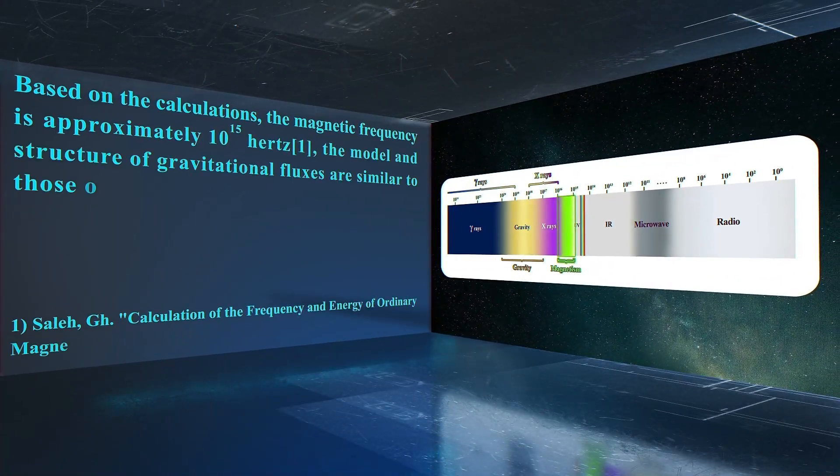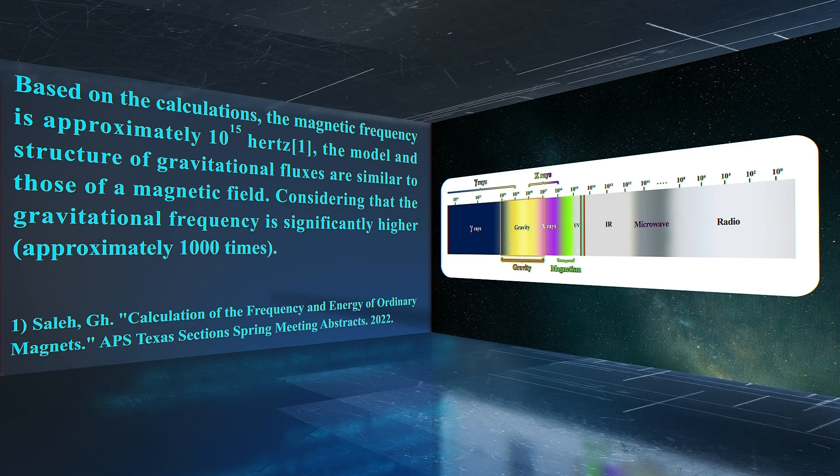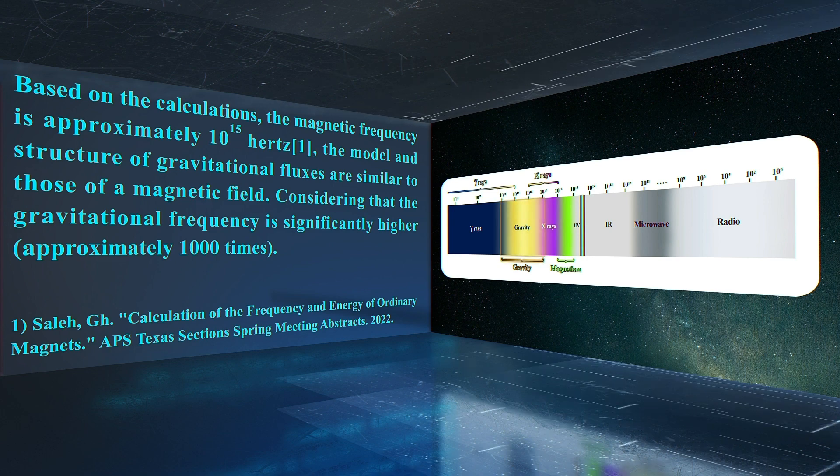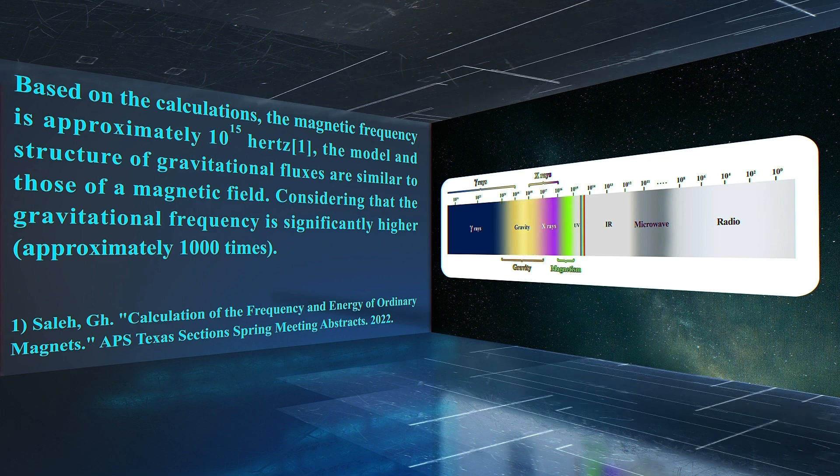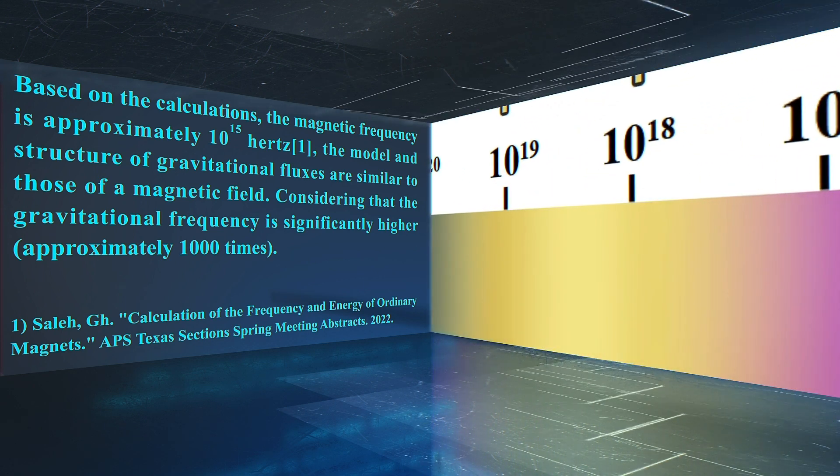Based on the calculations, the magnetic frequency is approximately 10 to the power of 15 Hertz. The model and structure of gravitational fluxes are similar to those of a magnetic field, considering that the gravitational frequency is significantly higher, approximately 1,000 times.